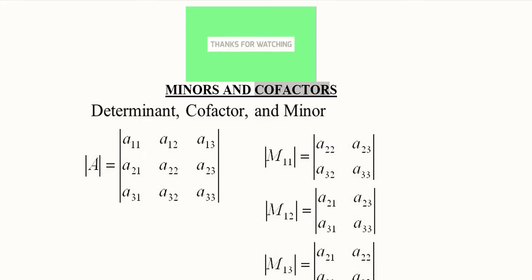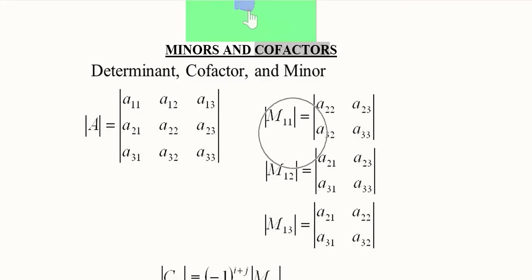If this is a 3x3 order determinant, the minors are simply the remaining sub-determinants once we choose a certain row or column. We have chosen the first row where a11 is located, so we drop its row and its column. We are left with a 2x2 sub-determinant, which is known as the minor — subscript 1,1 means the first row and first column have been dropped.